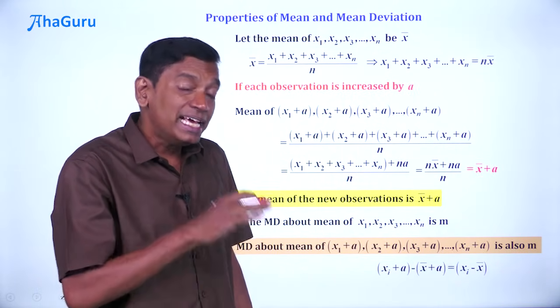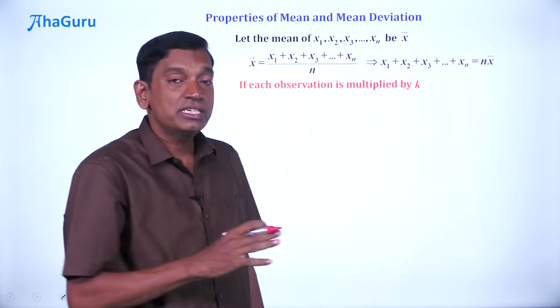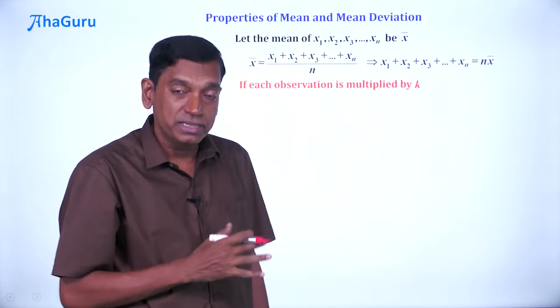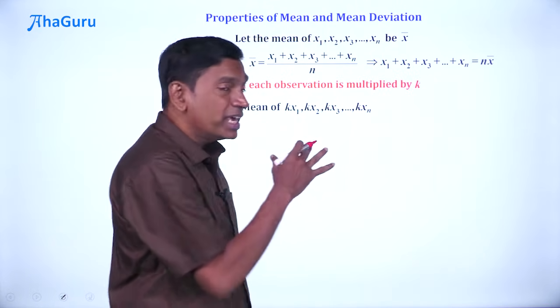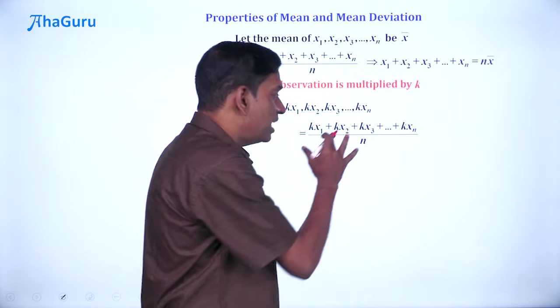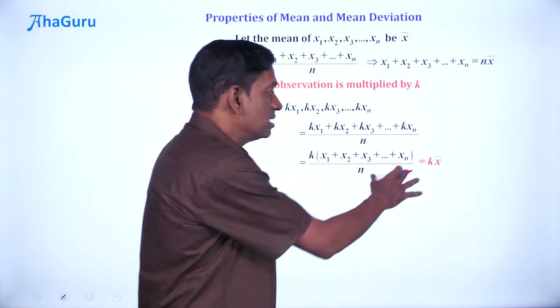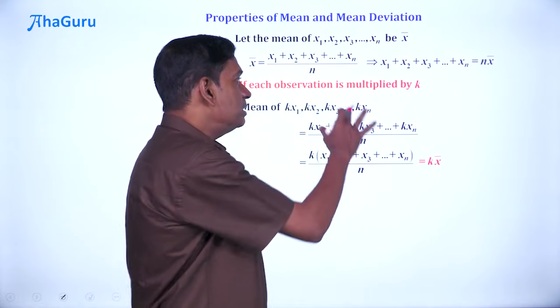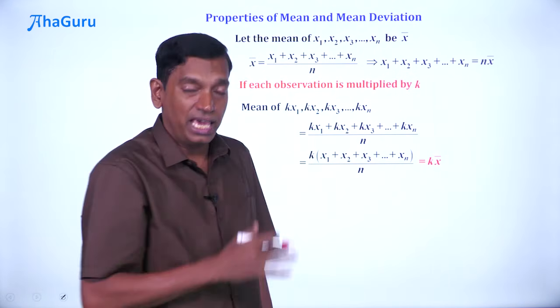Next, we can try multiplying each observation by some number k. The mean is going to be the mean of kx₁, kx₂, etcetera, which is (kx₁ + kx₂ + ...)/n = k(x₁ + x₂ + ...)/n = k × x̄. So if you multiply each number by k, the mean also gets multiplied by k.